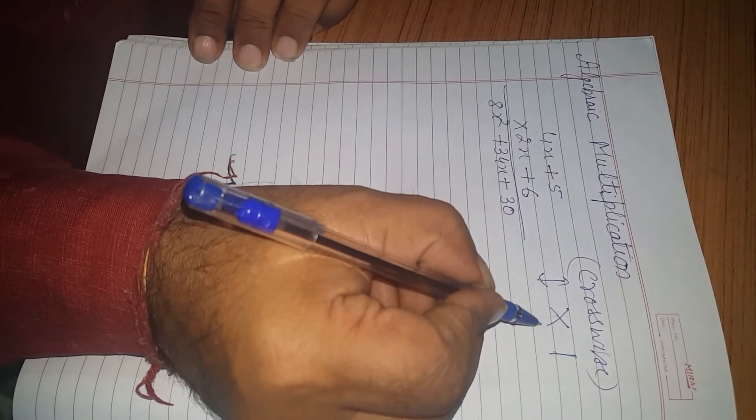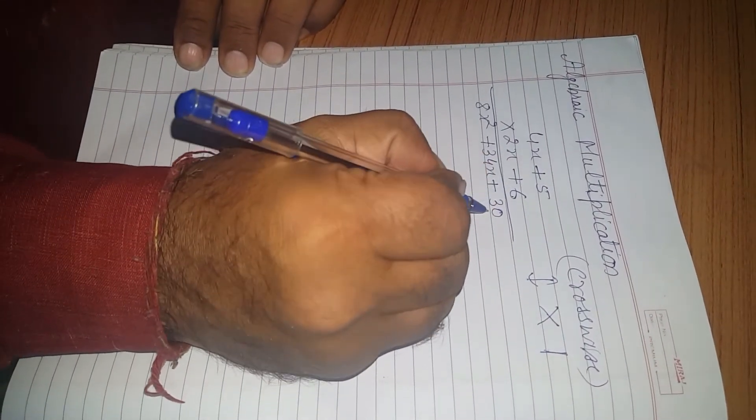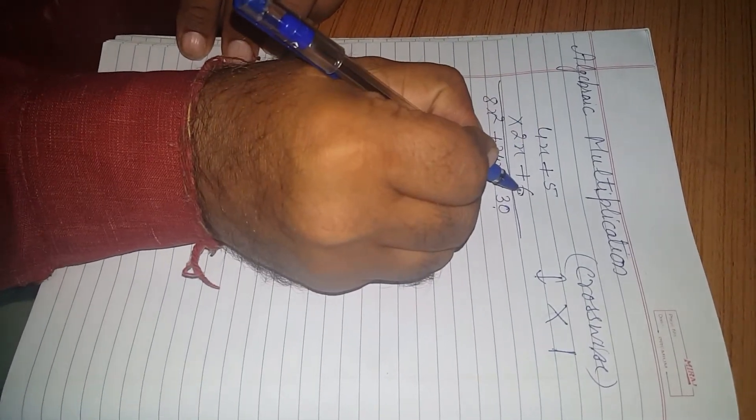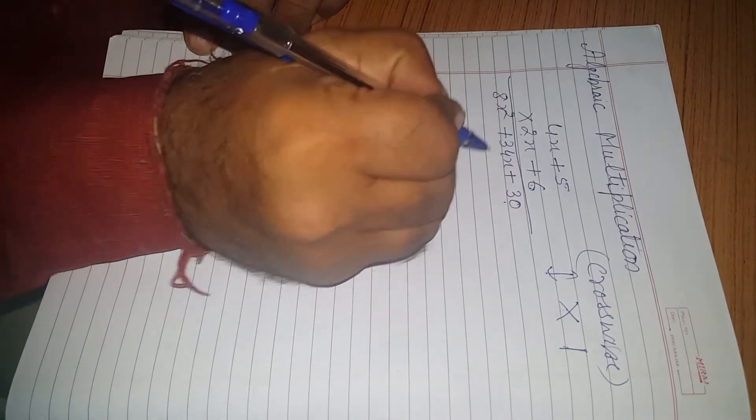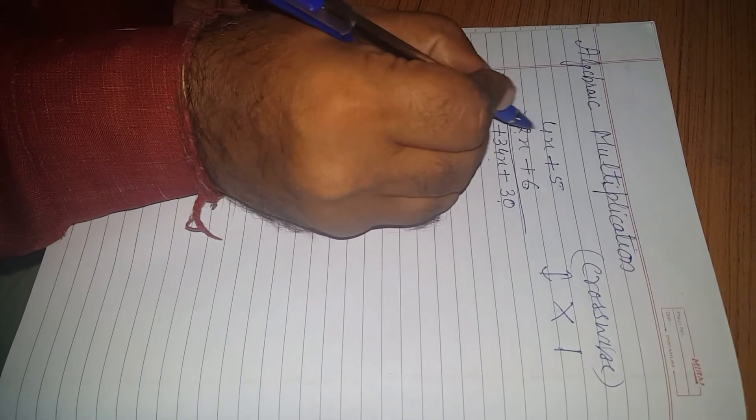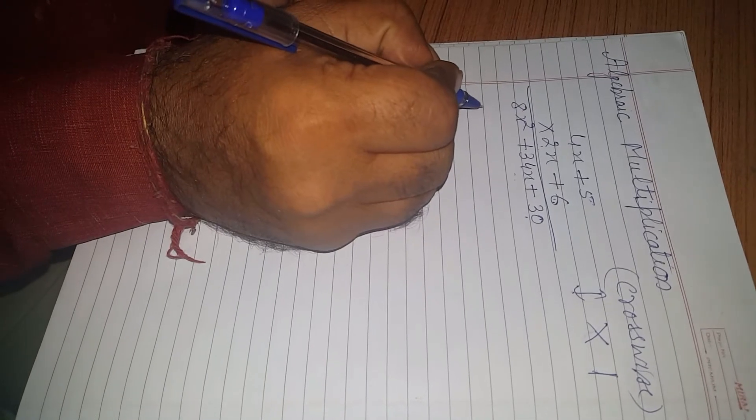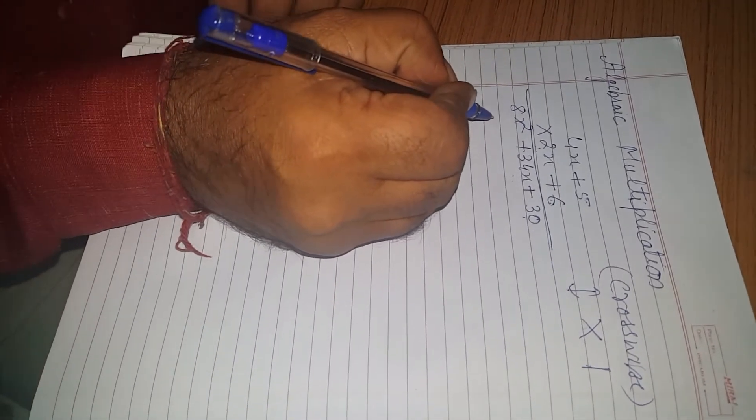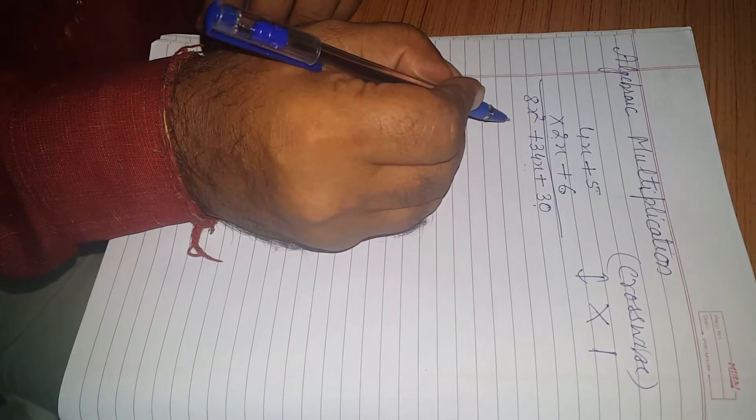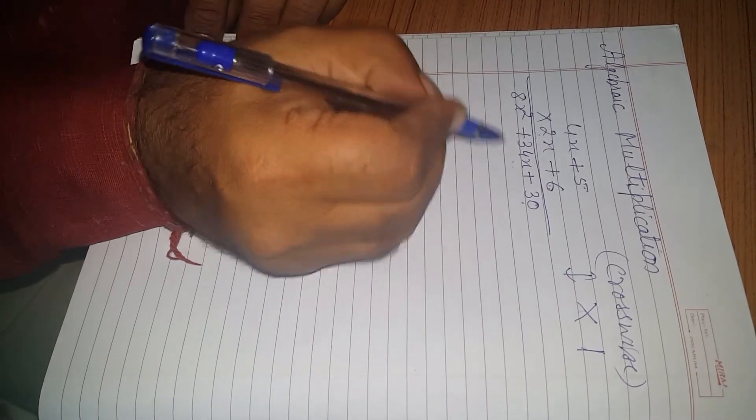So, here are the 3 steps. First Vertical: 5 into 6 is 30. Second is Crosswise: 4x into 6 is 24 and 5 into 2 is 10x. 24x plus 10x is 34x. Third step is 4x into 2x, so 8x square. Through Vedic Mathematics Sutra, we can multiply in a single line. We need not take two lines.